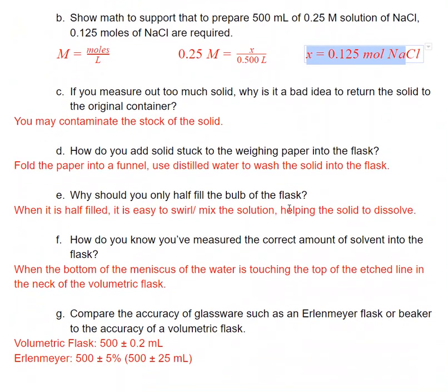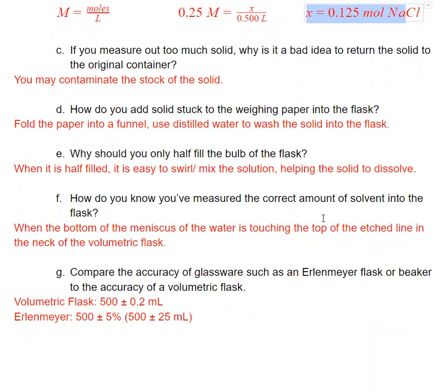If you measure out too much solid, why is it a bad idea to return it to the original container? You may contaminate the stock of the solid, which can cause impurities in future solutions. If you have solid stuck to your weighing paper, fold the paper in half so it's a little funnel and use distilled water to wash the solid into the flask. Why do we only want to half fill the bulb of the flask? When that bulb is half filled, it's going to be very easy to swirl the solution and that's going to help that solid to dissolve.